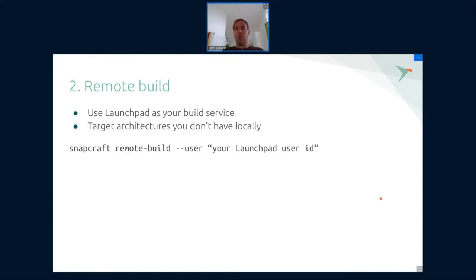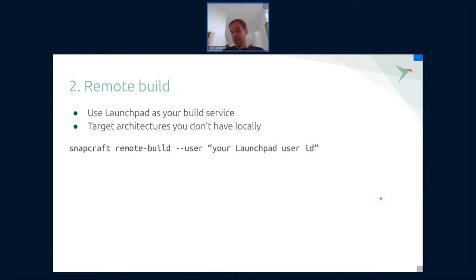Remote build. This was brought up yesterday during our office hour — the question was, is it possible to cross-compile Snaps? The answer is no, but there is the option to use remote build functionality. You can send your project to Launchpad, and Launchpad will build for six different architectures which you may not have locally. You basically need just your Launchpad token to authenticate. This is quite useful if you want to target ARM or IBM S390 or other architectures. One caveat is that your project will be public on Launchpad, so if you have a closed source application, you probably shouldn't use this.